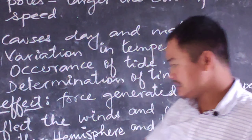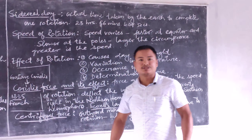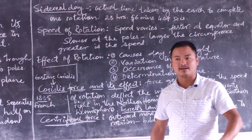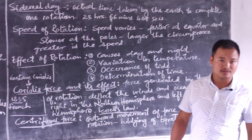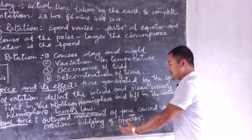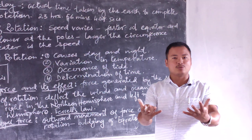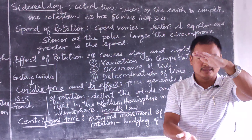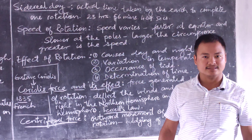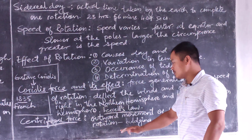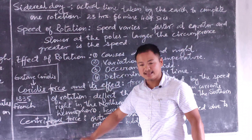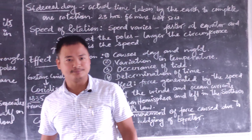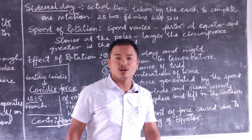The last topic for today is centrifugal force. Centrifugal force is an outward movement of force generated by the rotation of the earth. This force leads to the bulging of the equator and, as the equator bulges, the poles appear to be flattened. This is mostly caused by the centrifugal force generated by the rotation of the earth. That is all about rotation.